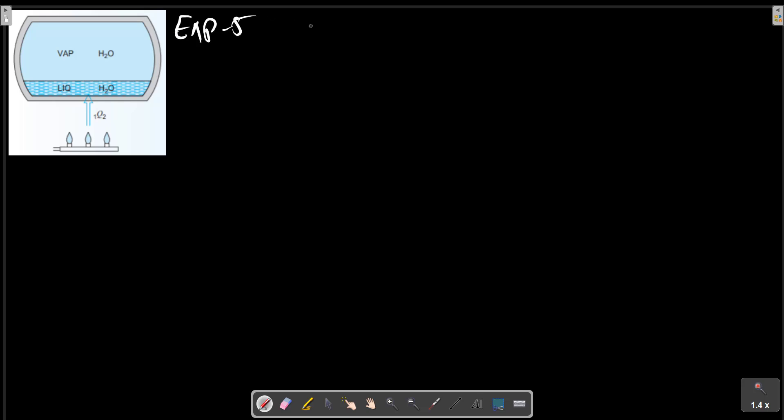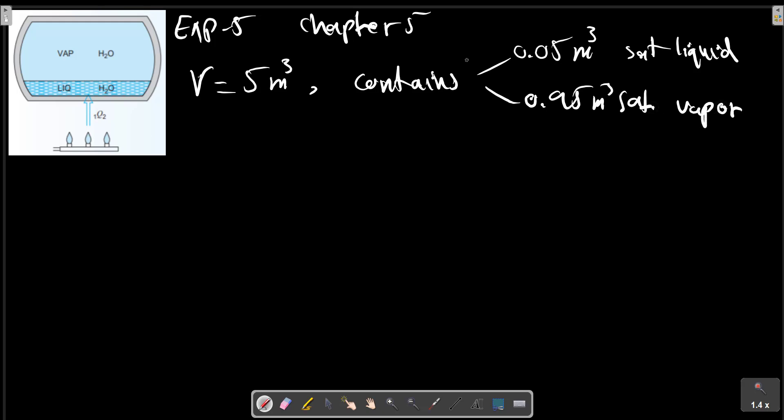Example 5, Chapter 5. A vessel having a volume of 5 meter cubed contains saturated liquid water and saturated vapor at pressure 1.3 megapascals.